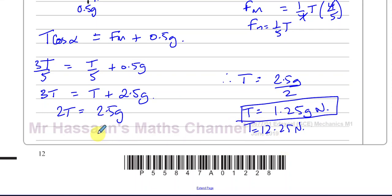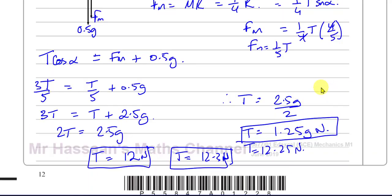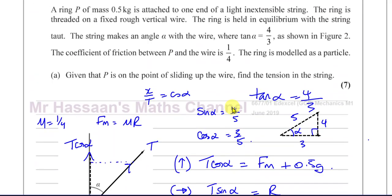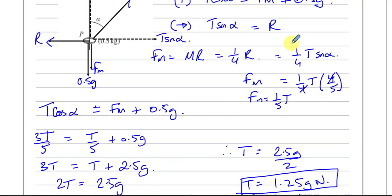You can leave the answer as 12.25 N, or round to 2 significant figures as 12 N, or to 3 significant figures as 12.3 N. Personally, I would leave it as 1.25g newtons. That's the answer to part (a) — the tension in the string.